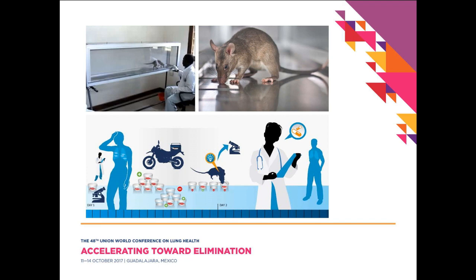The cage in which the rat does the testing has 10 holes. The rat must run over these and hover for about three seconds to indicate a positive sample. There are always known positives to reward the rat and keep it motivated to search for positive TB. The underlying principle is that rats can smell a set of volatile organic compounds — the correlate of a biomarker behind TB positivity. The sample comes to the rat, not the rat to the clinic.